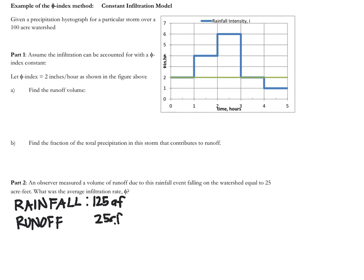We know that this observer saw that the runoff was 25 acre feet, which leads us to conclude that we have 100 acre feet of water that was lost from the watershed due to infiltration. 100 acre feet spread over the 100 acre watershed leads us to one foot of depth of total water that is infiltrated during the storm.